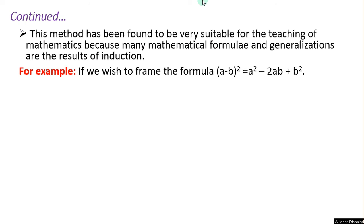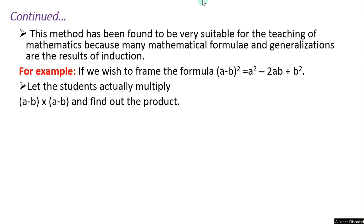They will say a-b into a-b. Then what is this? Multiplication of binomial. After multiplication, they will get the formula a² - 2ab + b². The student actually multiplies a-b into a-b two times, then the product they will get the formula.